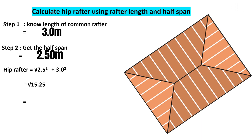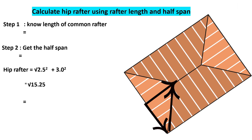To get the hip rafter, we extract that triangle. Using Pythagoras' theorem: 2.5 squared plus 3.0 squared, then we find the square root. That gives us the square root of 15.25, which equals 3.9 meters. That is our approximate hip length. When ordering material it is always better to round up, so we round 3.9 up to 4.0 meters.